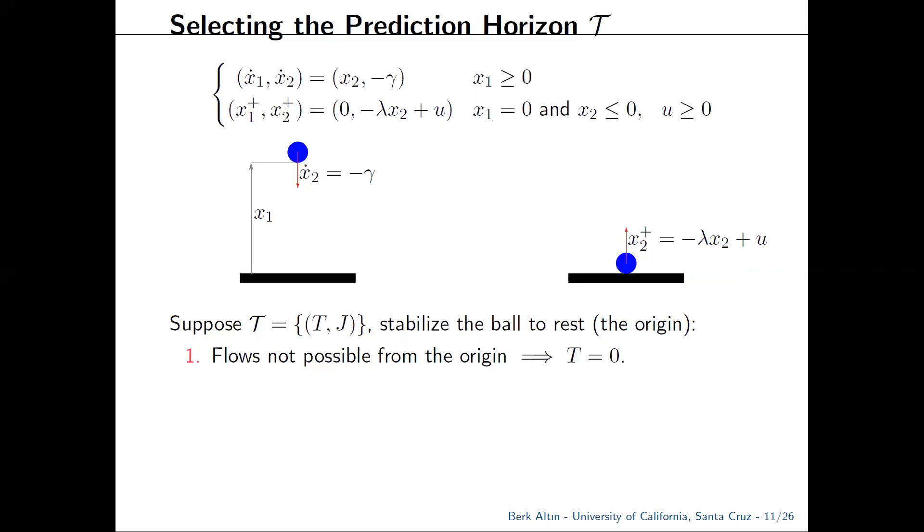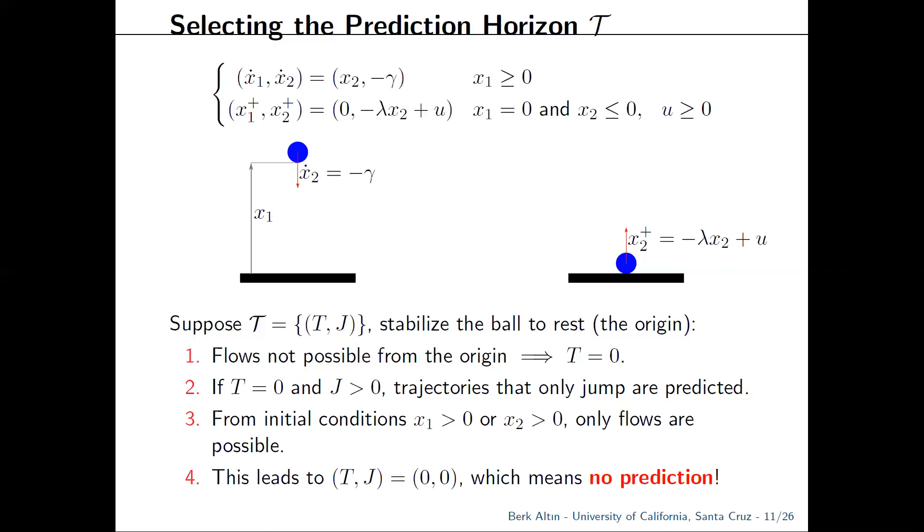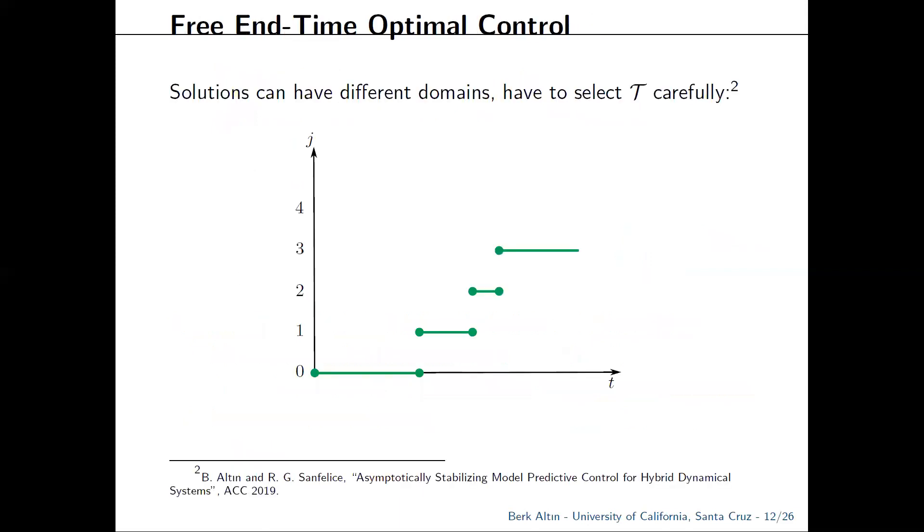So what happens if you try to stabilize the origin using MPC with a fixed time horizon? Well, for asymptotic stability, you need forward invariance of the origin. So you need to be able to find an optimal control from there. However, flows are not possible from the origin since gravity points downwards. That means that t must be zero. So only jumping trajectories are predicted. The catch is that if you perturb your initial conditions a little bit and you have positive height or velocity, you no longer have solutions that jump, which means that the optimal control problem is not solvable near the origin unless you set j is equal to zero, and that is a pathological scenario. You have no prediction.